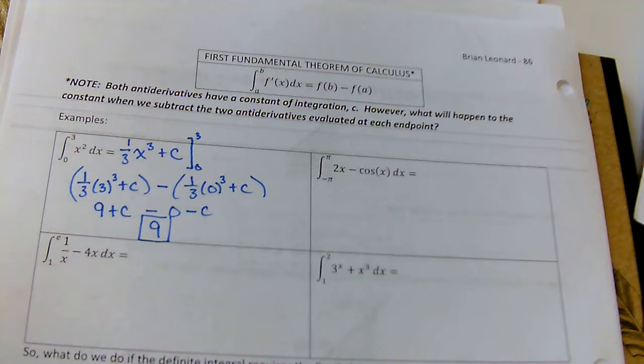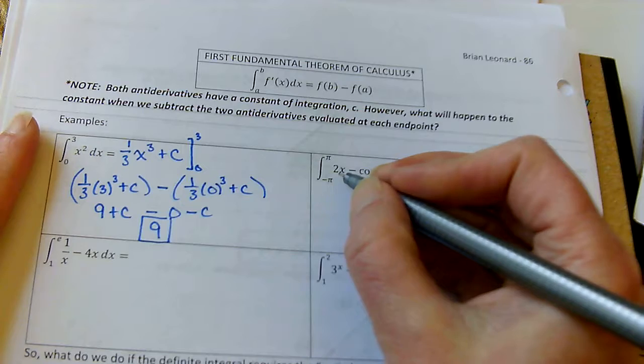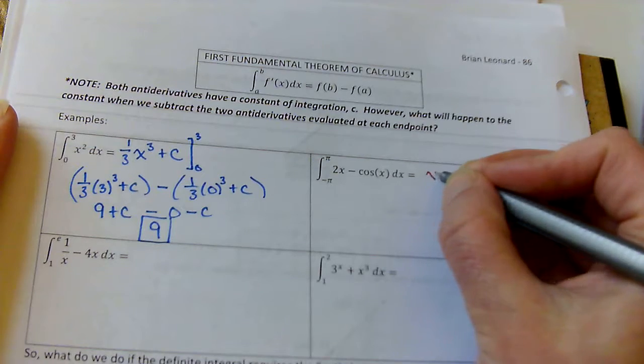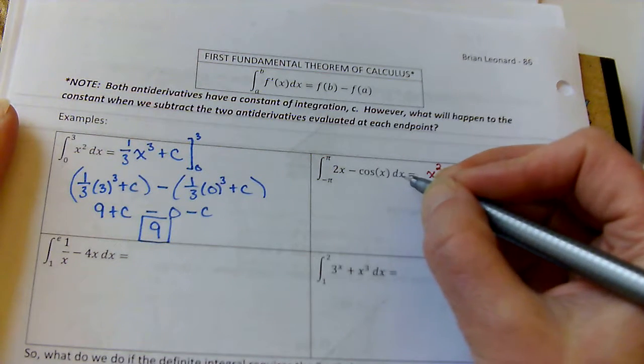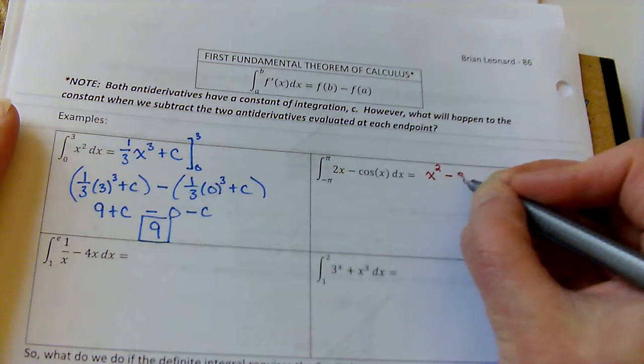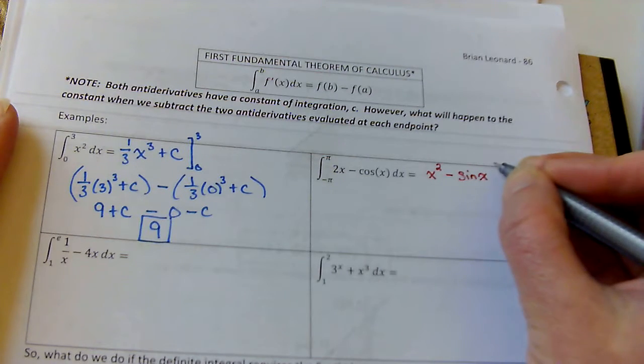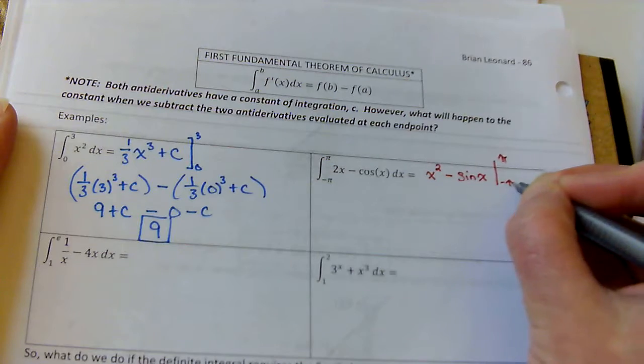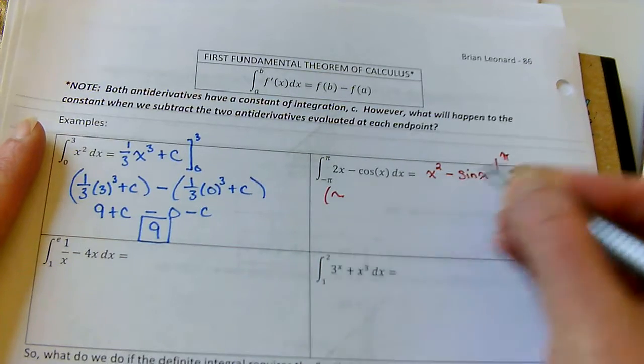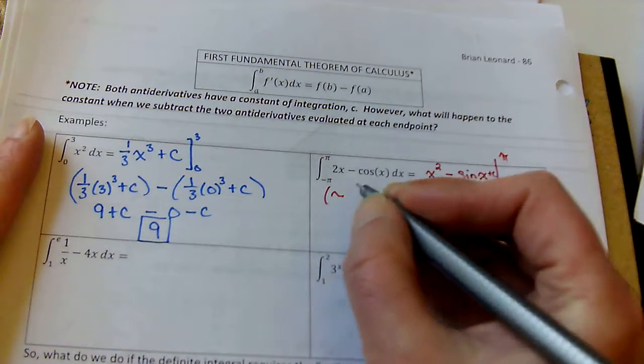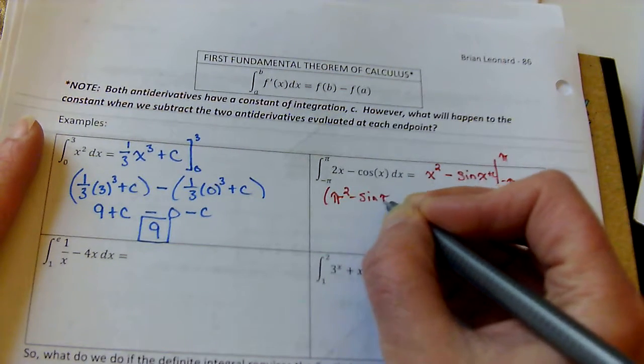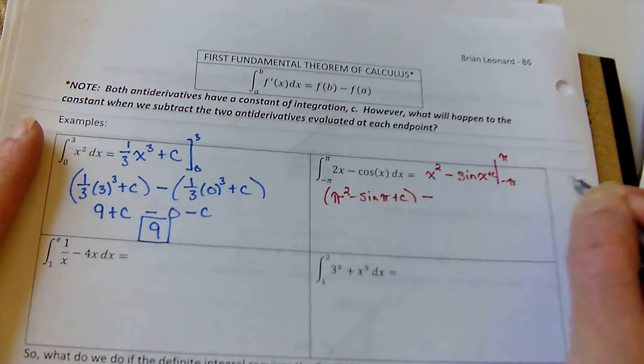Let's look at the next one. So we can split this up into two integrals. We're going to take the integral, the antiderivative of 2x. That one's easy. That's x squared. And what would give me cosine? Well, the derivative of sine is cosine, so this needs to be negative sine x. And we're going to evaluate from negative pi to pi. So I need to plug in pi. Oops, I forgot the plus c, didn't I? Plus c. If I plug in pi, pi squared minus sine of pi plus c minus, let's plug in negative pi.